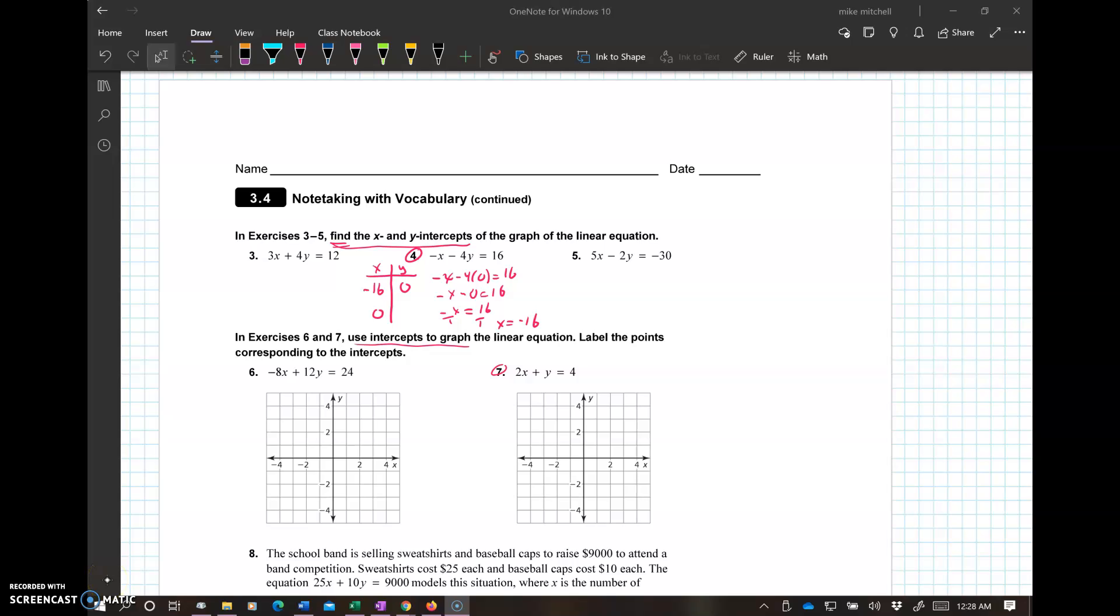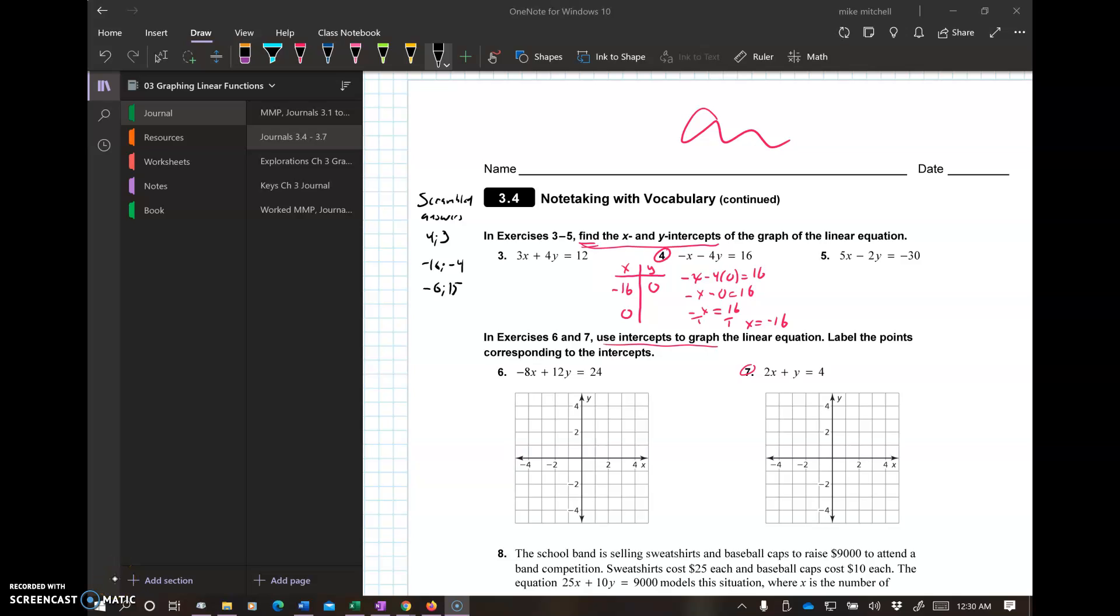So I've got that. My x-intercept is negative 16, 0. Again, if you need extra paper, kids, remember, use it. Attach it. You can write up here. You can write in other places. Let's find my y-intercept now. So that's going to be negative 0 minus 4y equals 16. That's 0 minus 4y equals 16. Negative 4y equals 16. I divide by negative 4. Y equals negative 4. So I'm going to write up here. My x-intercept is negative 16. My y-intercept is negative 4. And I can see that answer over here. So that's looking good.